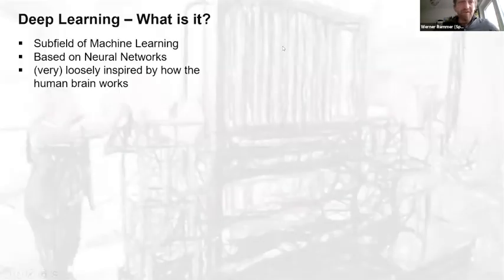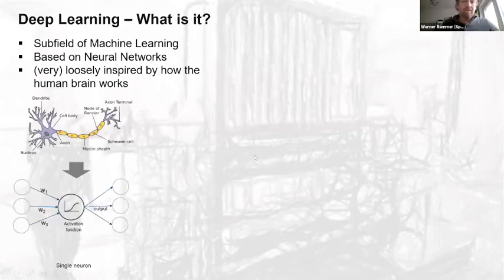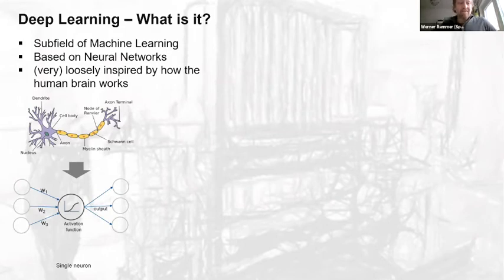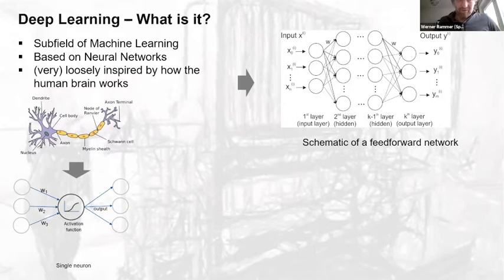What is deep learning? It's basically a subfield of machine learning based on neural networks, already around for about 50 years, very loosely inspired by how the human brain works. A single neuron in the brain corresponds to a single compute node in deep learning: a set of weights processed by an activation function, connected in a network with inputs on one side, outputs on the other, and a number of hidden layers in between. Having more than one hidden layer is why these are called deep neural networks.